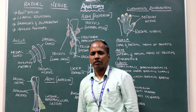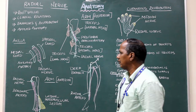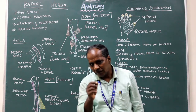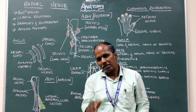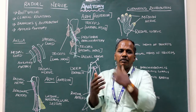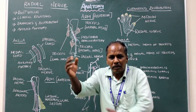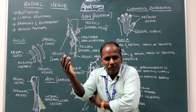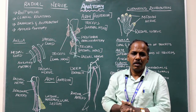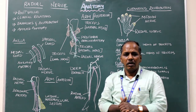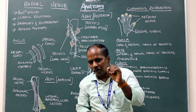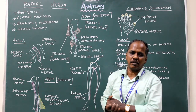Radial nerve. It is the chief nerve of the posterior compartment of the arm and the forearm. It is the nerve of the posterior cord of the brachial plexus.